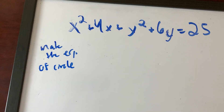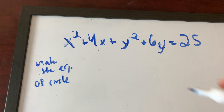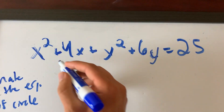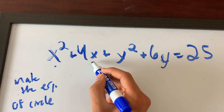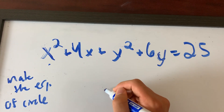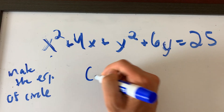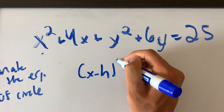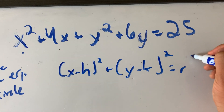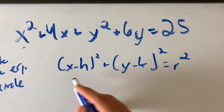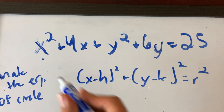So how would you make the circle equation using this? It's called completing the square. What you have to do is simplify this. We know the equation of the circle is: X minus H squared plus Y minus K squared equals R squared. That is the equation of the circle. You have to get the given expression into this form. So let's do that.